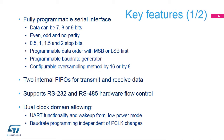The USART is a fully programmable serial interface featuring the following configurable parameters: data length, parity, number of stop bits, data order, baud rate generator, and a configurable over-sampling mode by 8 or by 16. The USART can operate in FIFO mode, and it comes with transmit and receive FIFOs.